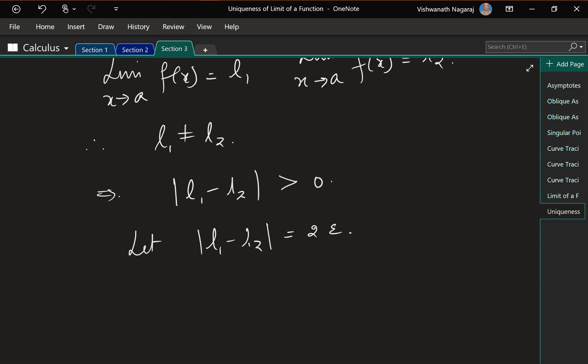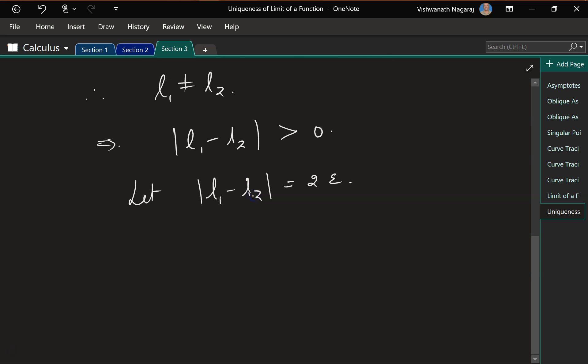Why 2 epsilon? Because, you know, some simplifications can happen later on much more easily. So I have l1 minus l2, the distance between them is greater than 0, and let's say the distance between these is equal to 2 epsilon.